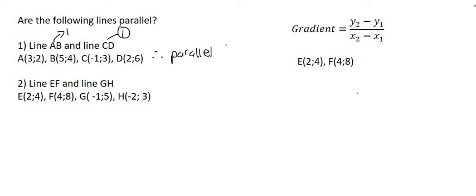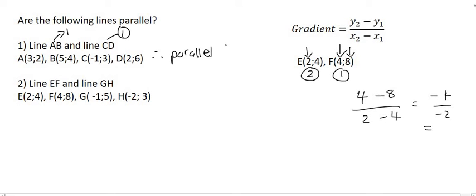Moving on to number 2, where we're going to look at line EF and line GH. Looking at line EF, I'm going to call E point number 2 and F point number 1, and then use the formula. So the Y value of point number 2 is 4, minus the Y value of point number 1, which is 8, over the X value of point number 2, which is 2, and the X value of point number 1, which is 4. If I simplify this, I end up with minus 4 at the top and minus 2 at the bottom. A minus and a minus is a positive, and that gives you 2. So the gradient of line EF is 2.